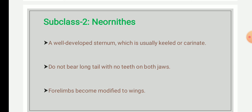They do not bear a long tail and the teeth are absent on both jaws. In some cases, teeth are replaced by a horny structure referred to as a bill. In some species of extinct birds, teeth were still present, while the bill was absent in others.